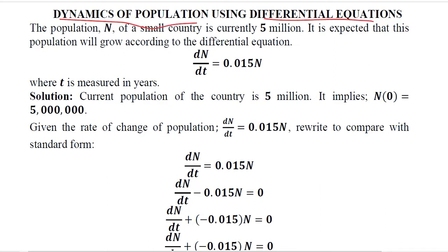This example contains a situation where the population is represented by N, and it is the population of a small country equal to 5 million currently. This means the initial condition is 5 million.